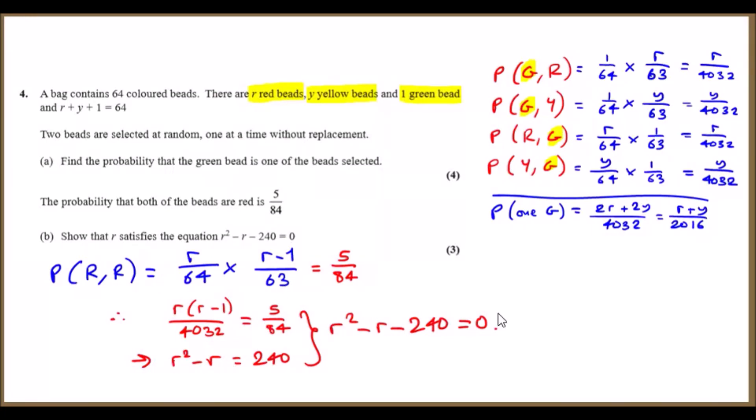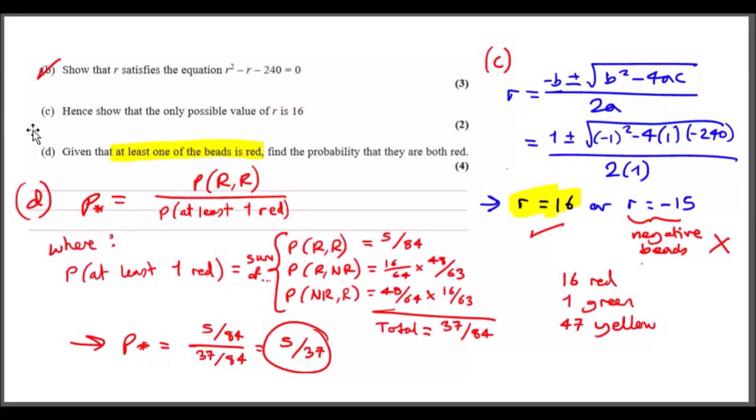Part C: Hence show that the only possible value of r is 16. This is from part B, so you look at the quadratic equation and just have to solve it. I just use the quadratic formula because it's easy to use. You just have to recall this is how the formula looks like: a, b, and c are the coefficients of the quadratic.